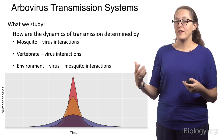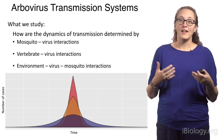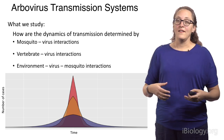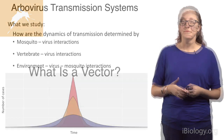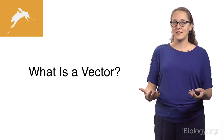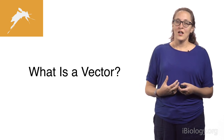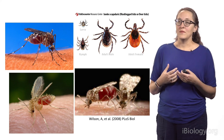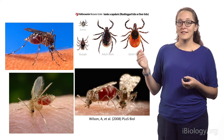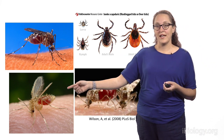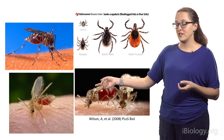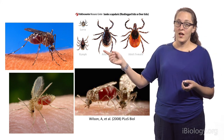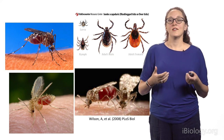In my lab, what we're interested in is how the dynamics of transmission are determined by the interactions of the transmission system — which are the mosquito-virus interactions, the vertebrate-virus interactions, and the environment-virus-mosquito interactions. What is a vector? A vector is something that transmits these pathogens — in my case, viruses. There are many species that can act as vectors: mosquitoes, ticks, sandflies — which are implicated in leishmaniasis — and biting midges, responsible for things like bluetongue virus. Ticks can transmit viruses but also bacterial agents. But I'm going to focus on mosquitoes, because I love mosquitoes.